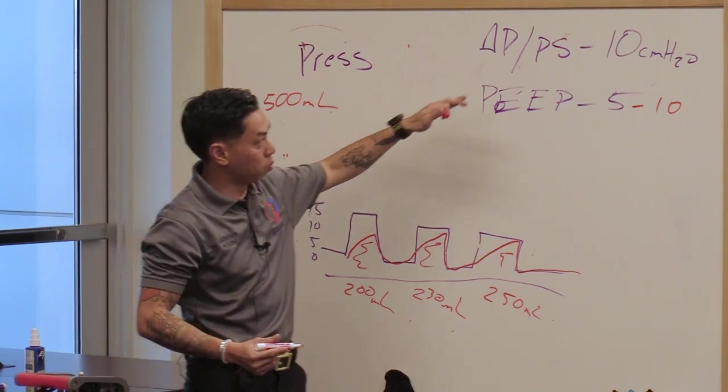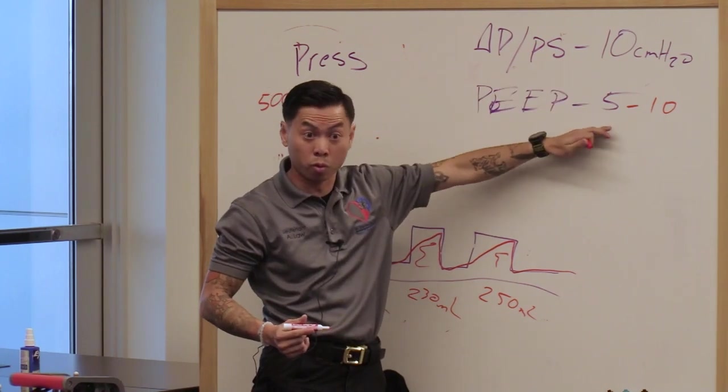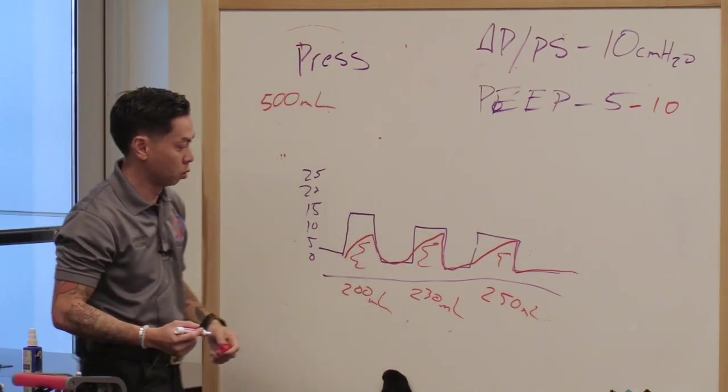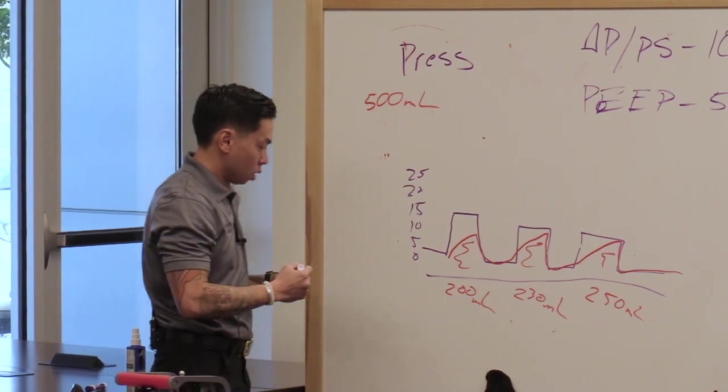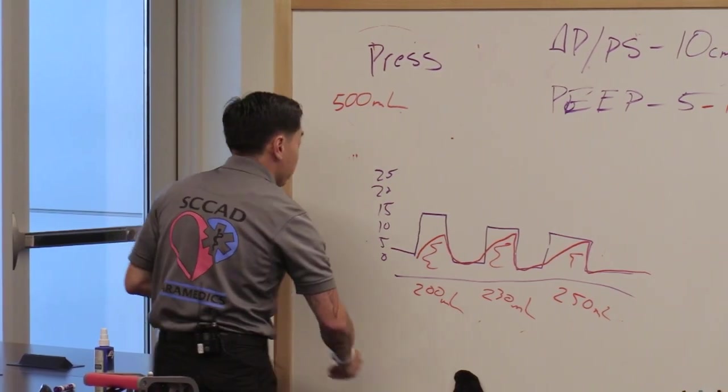So you're in this mode, you're changing pressures, but we're monitoring our volumes and we're seeing where it's at. And if you're like, oh, this number's not right, okay, then I need to increase my pressure support, my delta P. And inversely too, if I increase my PEEP, so if I change this to 10, well guess what? It's the difference of PEEP. So my IPAP now is 20. So also, increasing your PEEP will inadvertently increase your volumes. Does that make sense?